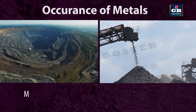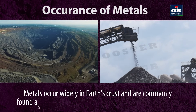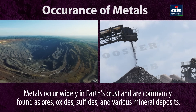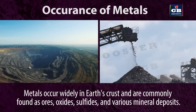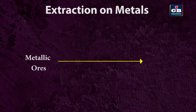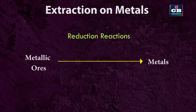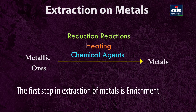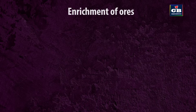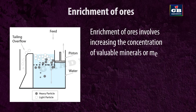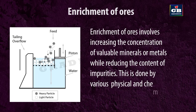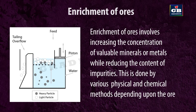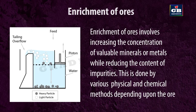Occurrence of metals. Metals occur widely in the earth's crust and are commonly found as ores, oxides, sulfides, and various mineral deposits. Extraction of metals: metals are extracted from their ores through processes involving reduction reactions, often utilizing heat and chemical agents to obtain the desired metal in purified form. The first step is enrichment of ores, which involves increasing the concentration of valuable minerals while reducing impurities.